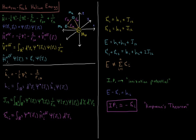The Schrödinger equation for orbital 1 is that the effective (mean-field) Hamiltonian acting on psi-1 gives the orbital energy epsilon-1 times psi-1, the orbital of electron 1.